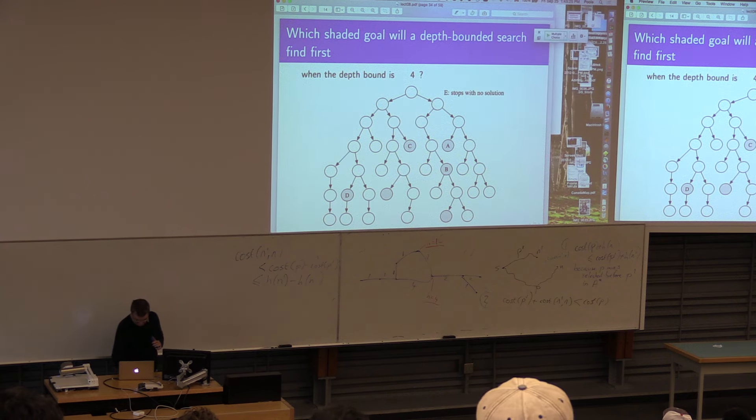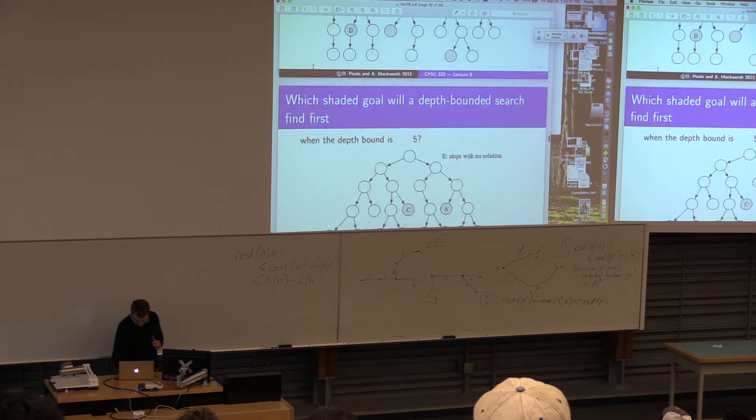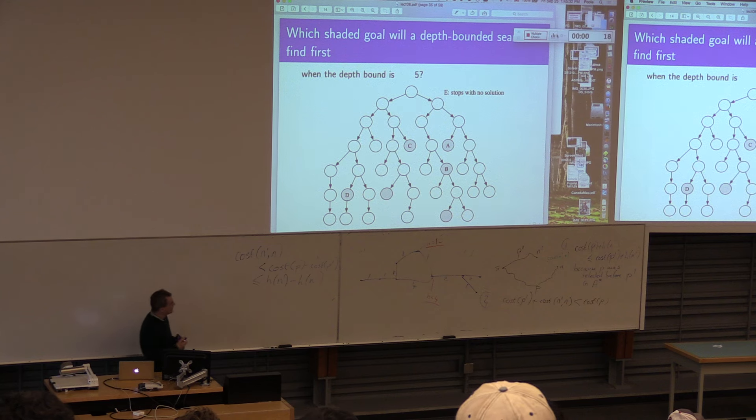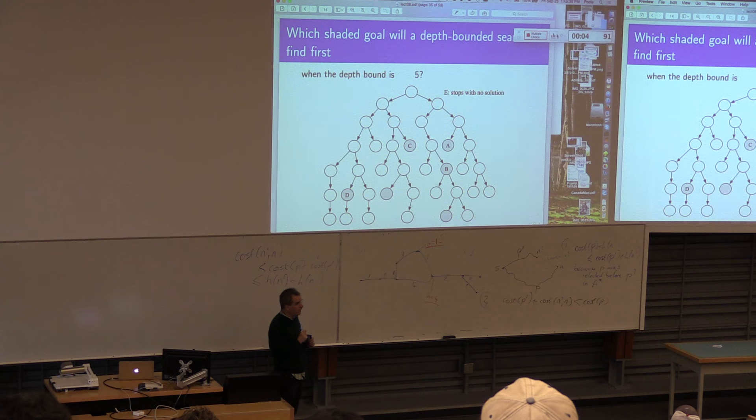And what about when the bound is five? It's going to search, do a depth first search of depth five. What's it going to find first? Which node is it going to find?